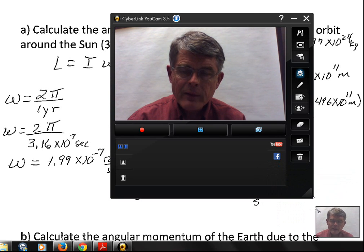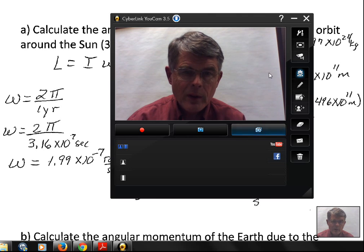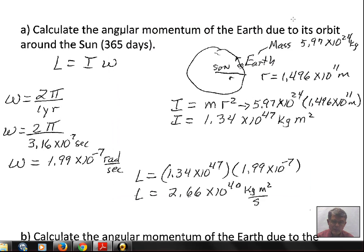This video will calculate the angular momentum of the Earth, once for the Earth's angular momentum while it's in orbit around the sun, and secondly, the angular momentum of the Earth just due to spinning on its axis. Angular momentum is calculated by rotational inertia times the angular velocity.